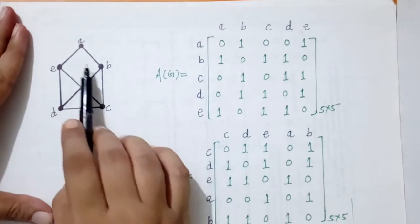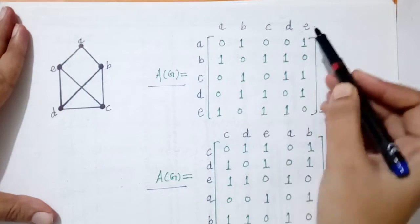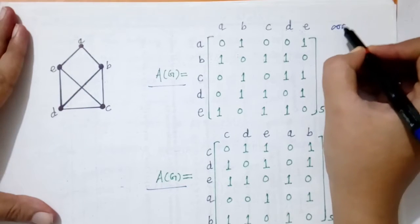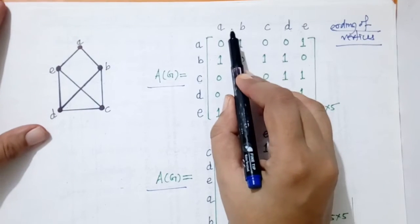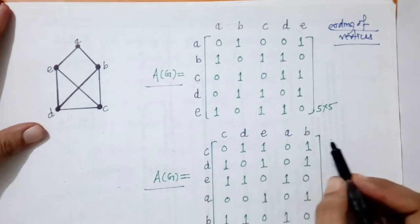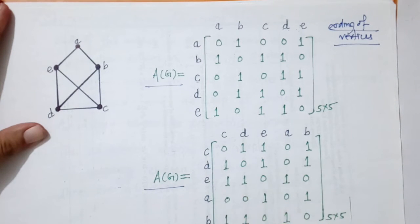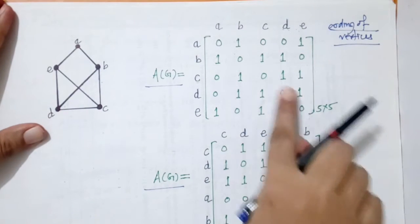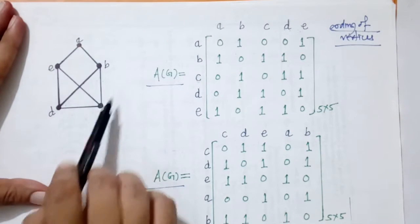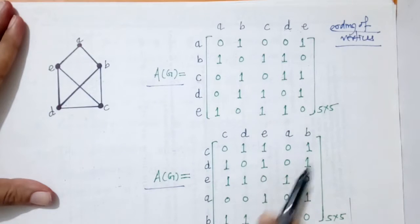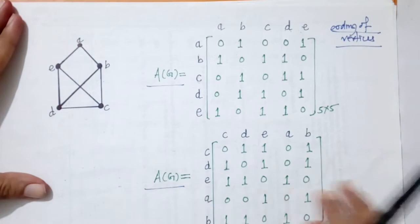Here we have two matrices with different orderings of vertices. The first matrix uses ordering a, b, c, d, e, and the second uses ordering c, d, e, a, b. We can observe that these two matrices are different — meaning that as we change the ordering of the vertices, we get a different adjacency matrix for the same graph.